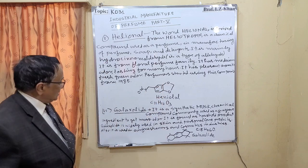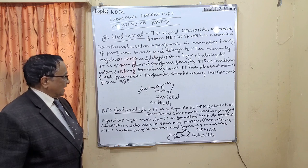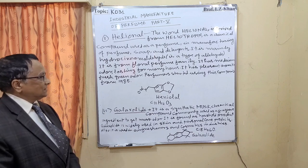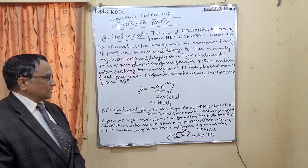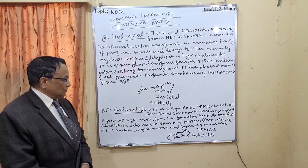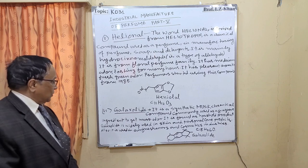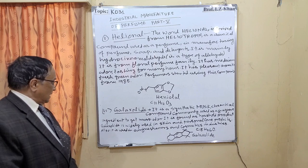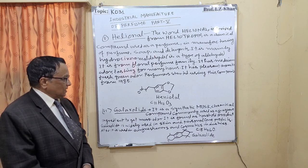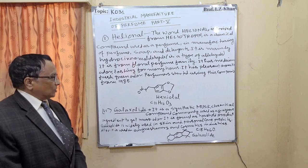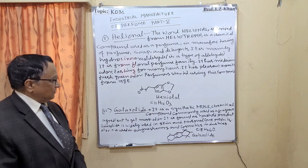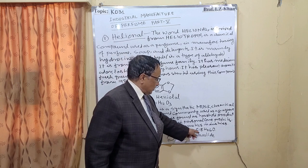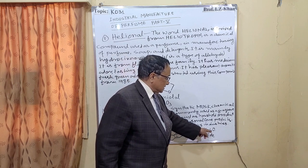The sixth compound is galaxolide, a synthetic musk-type fragrance chemical commonly used as a fragrant ingredient to produce a musk odor. Galaxolide is found in household products and is widely used in skin and personal care products, as well as air fresheners and cosmetic industry manufacturing. Its structure and formula C18H26O are shown here.